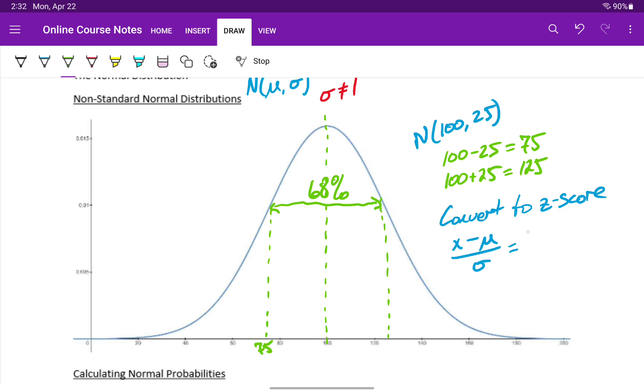For instance, we could take our value of 75, which we found to be one standard deviation below the mean. We subtract the mean from that and divide by 25 to get negative 25 over 25 equals negative 1, which is exactly how many standard deviations we are away from the mean.